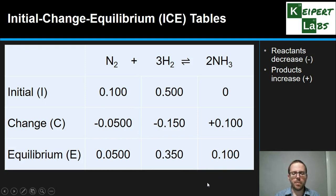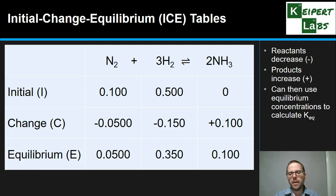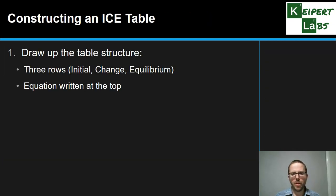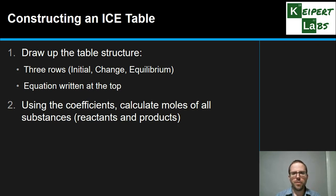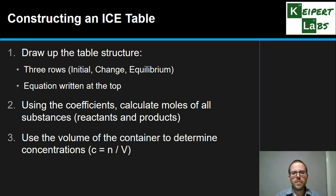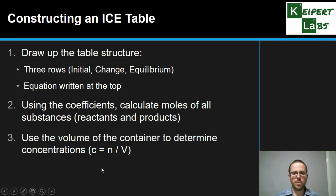In another type of example, we can use algebra to fill in unknowns. If we don't know how much a concentration has changed, we use X to keep track. To construct an ICE table: draw the three-row structure with the equation at the top, checking stoichiometry carefully. Use those coefficients to calculate moles of all substances, then convert to concentrations using the container volume if needed — dividing moles by volume to get mol/L. If concentrations are already given, that step can be skipped.